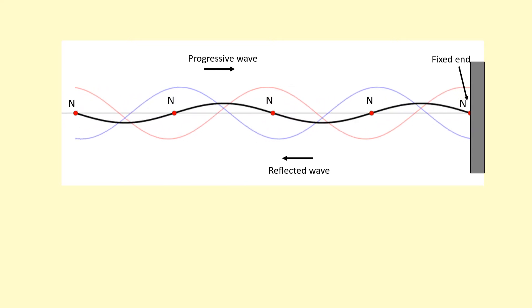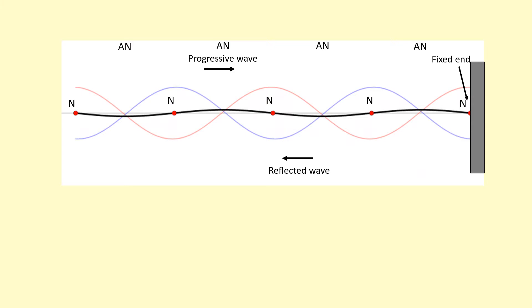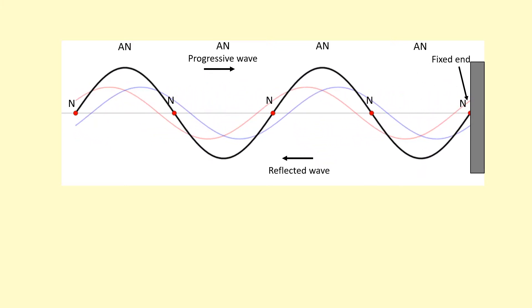Again, you can see points of zero amplitude where the particles aren't oscillating at all, called the nodes. And you've got the antinodes where the particles are oscillating with the largest amplitude.